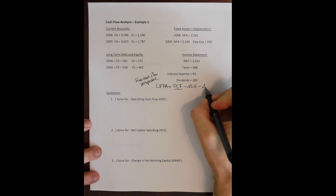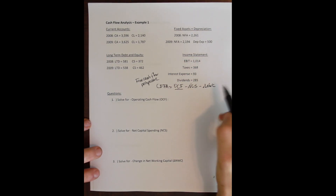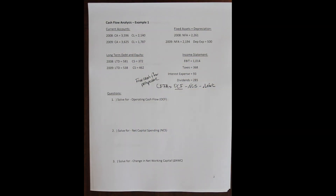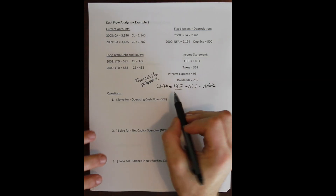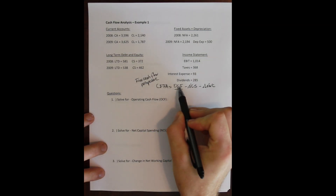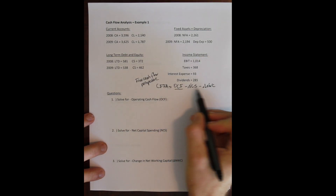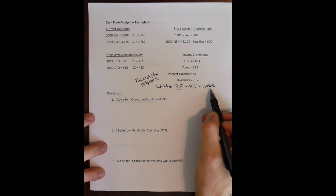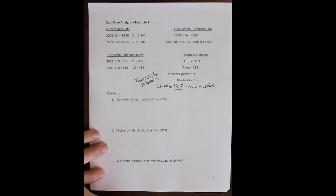We also subtract any change in working capital, which is an investment in current assets rather than fixed assets — things like additional cash or inventory needed during the year. What's left over after operating income and investments in fixed or working capital is called cash flow from assets — the money left over from running the business.